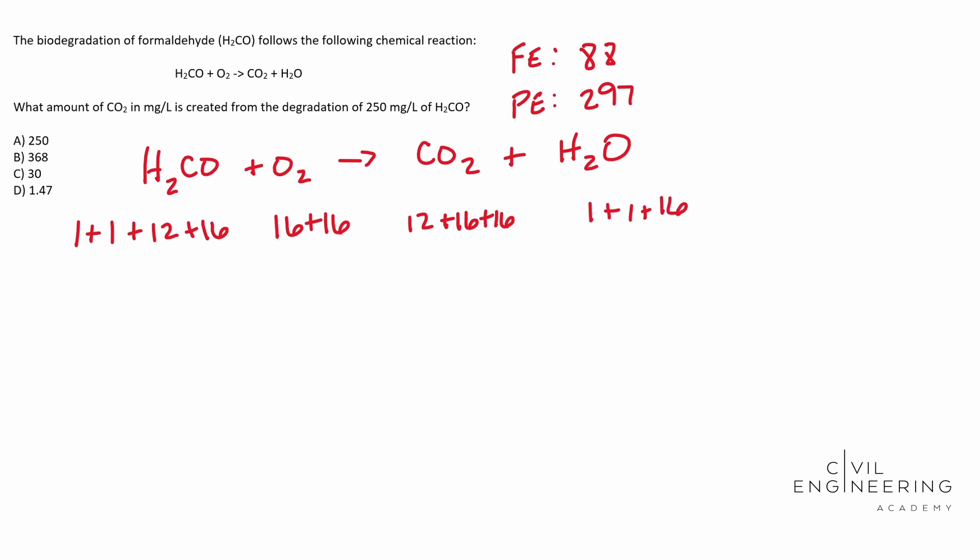So if you add these up respectively, you end up with 30 for your formaldehyde. You end up with 32 for your oxygen. For carbon dioxide, you end up with 44. And for water, you end up with 18.